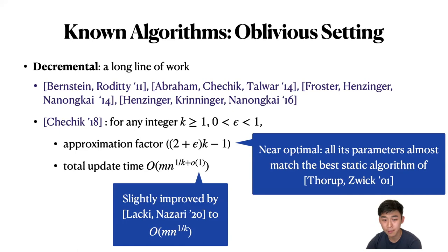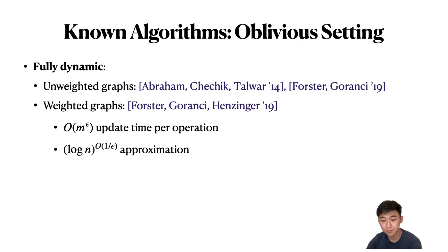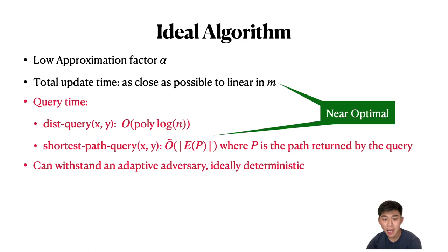In the fully dynamic oblivious setting, there are works done in unweighted graphs. For weighted graphs, there is work by Forster et al. in 2019, where they gave an algorithm achieving approximation factor log(n)^{O(1/epsilon)} and update time O(m^epsilon) per operation. However, their algorithm can only support distance queries.